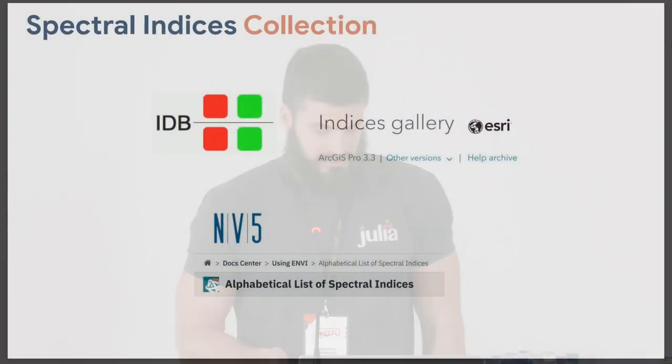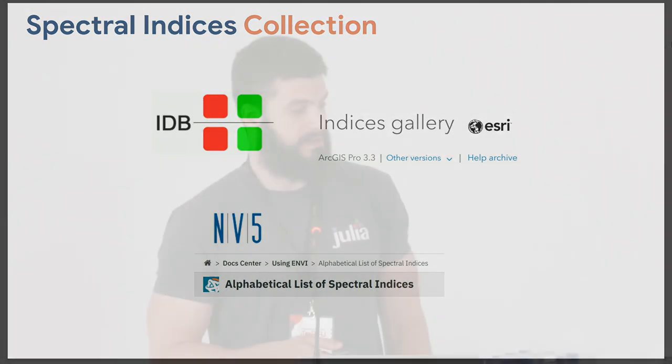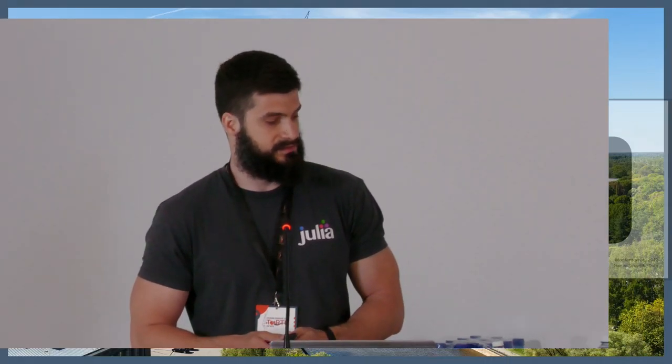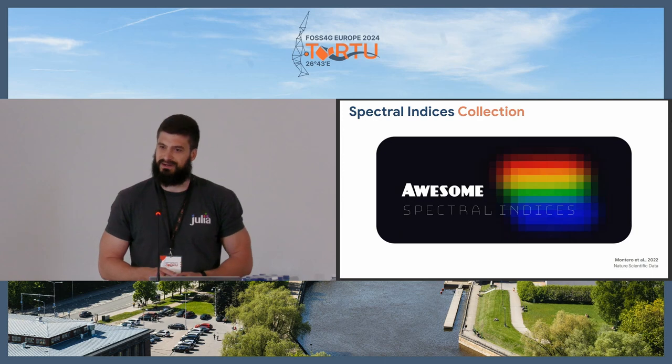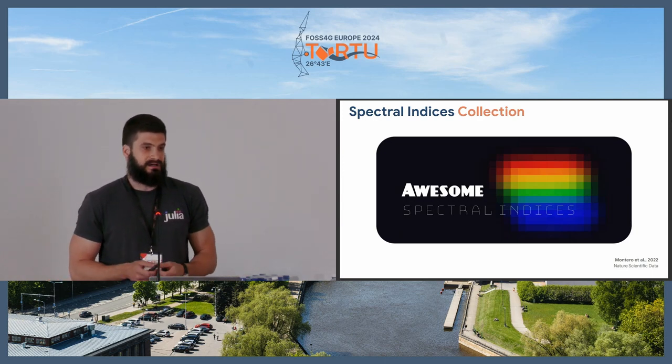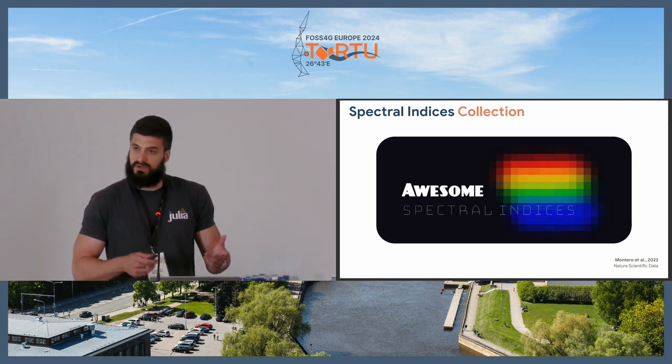Some collections do exist — for example, the Index Database, the ESRI Indices Gallery, and the NV Alphabetical List of Spectral Indices. These are of course very good, but they all have some drawbacks — for example, not being open source or not providing machine-readable packages. A solution to this was presented in 2022: the Awesome Spectral Indices collection, started by David Montero, who is actually here in the audience and will give a presentation after me.